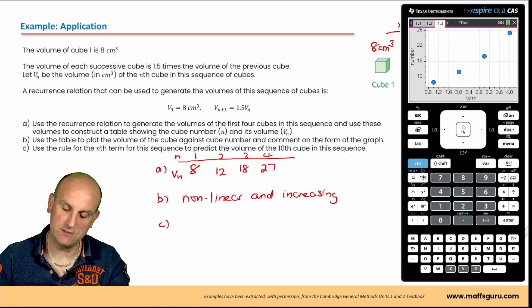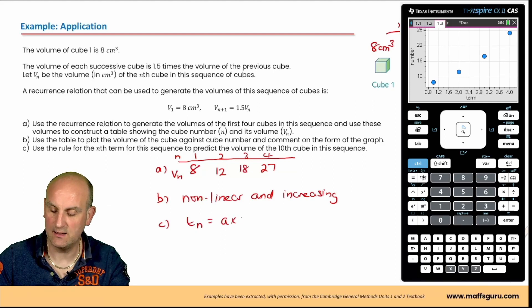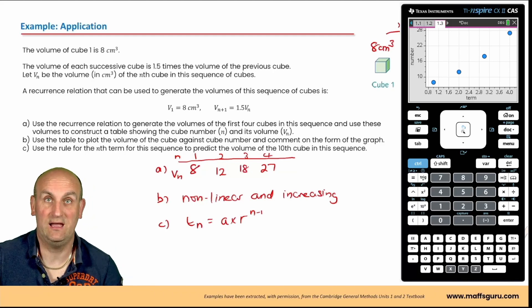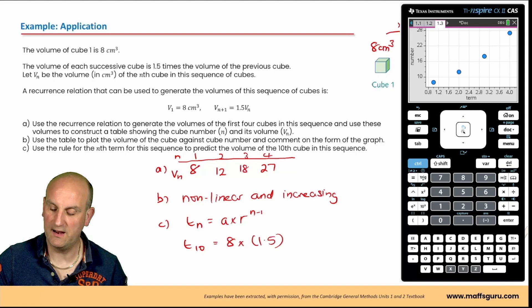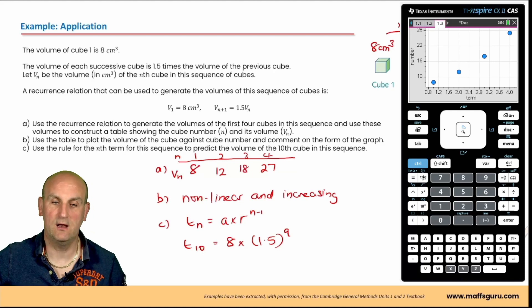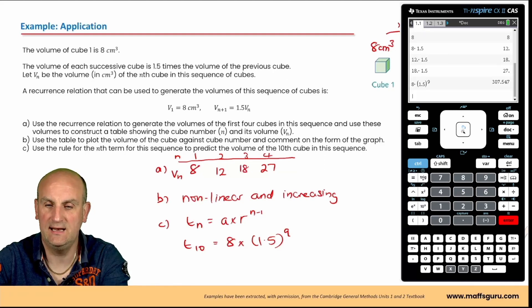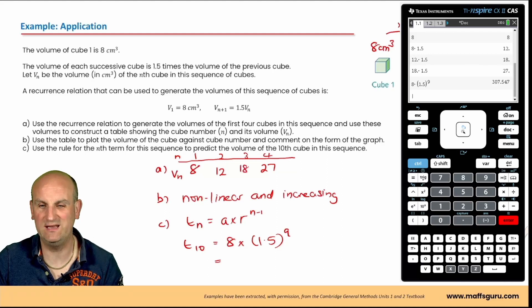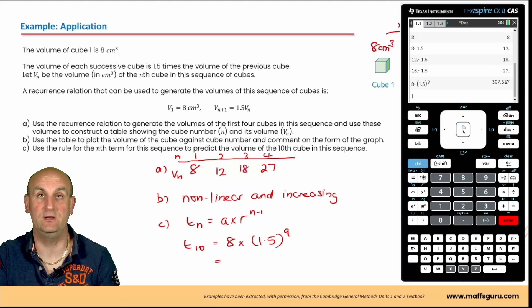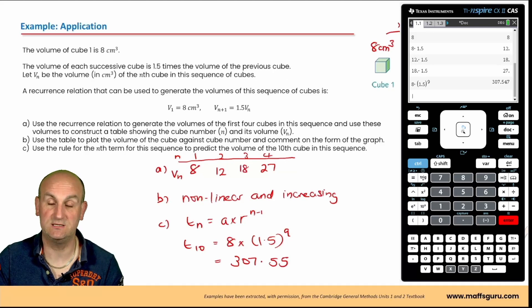For part C, use the rule for the nth term to predict the volume of the 10th cube. Writing the formula: t(n) = a × r^(n−1). Substituting: t(10) = 8 × 1.5^9. On the calculator: 8 × 1.5^9 gives approximately 307.547. Rounding to two decimal places that is 307.55 cm³ — don't forget the units, because we are dealing with volume.